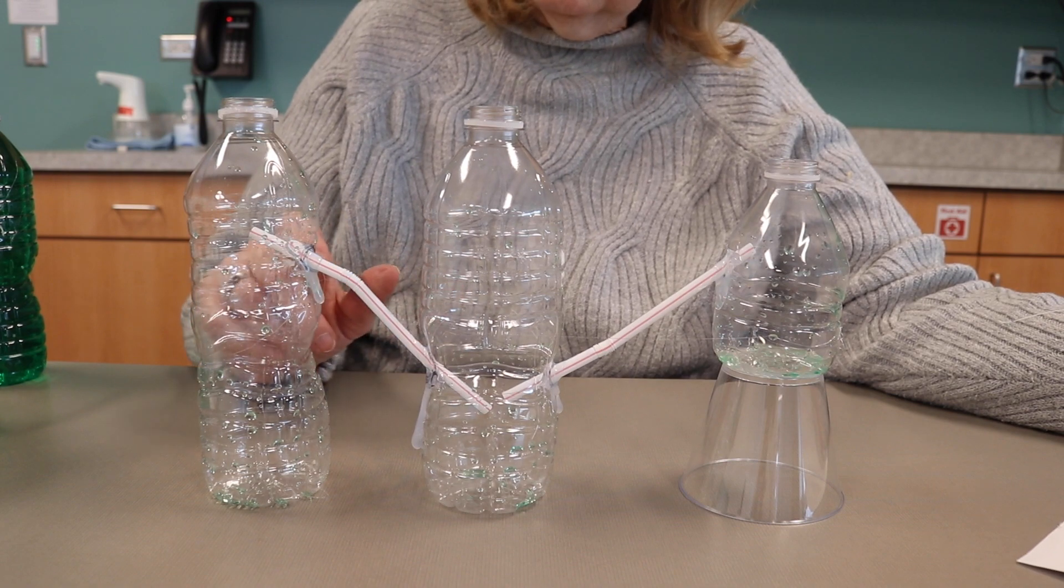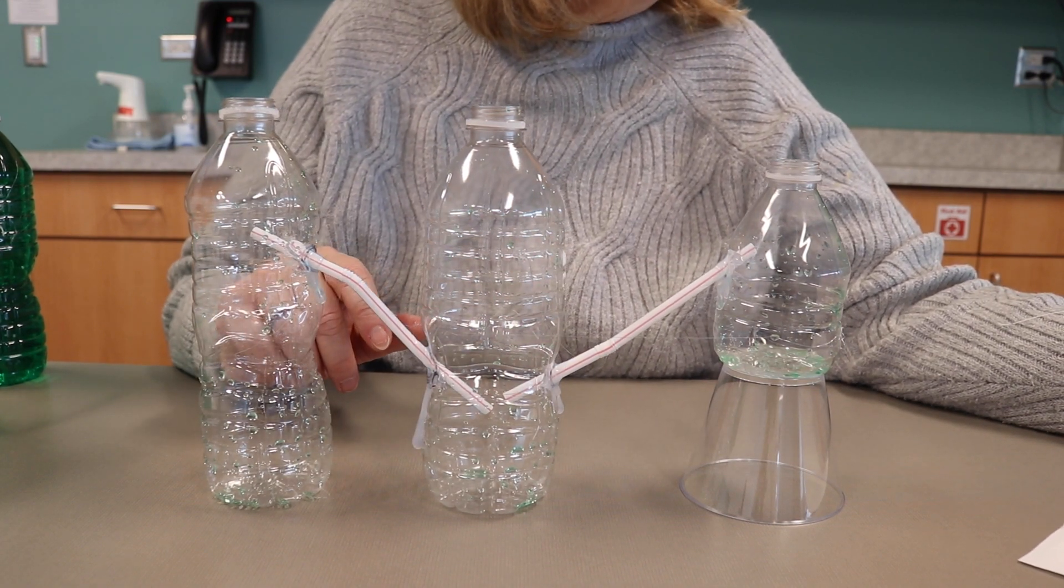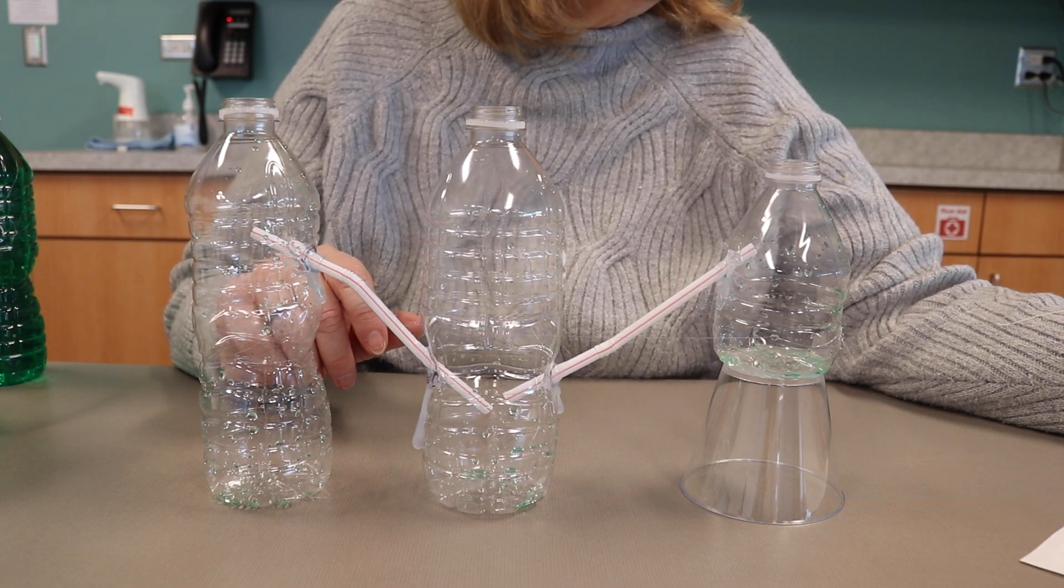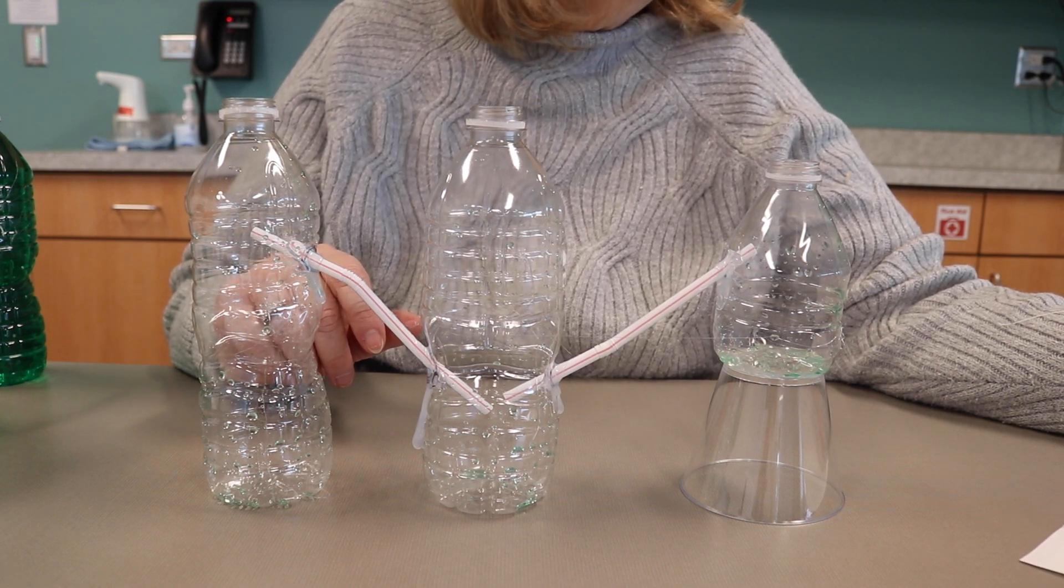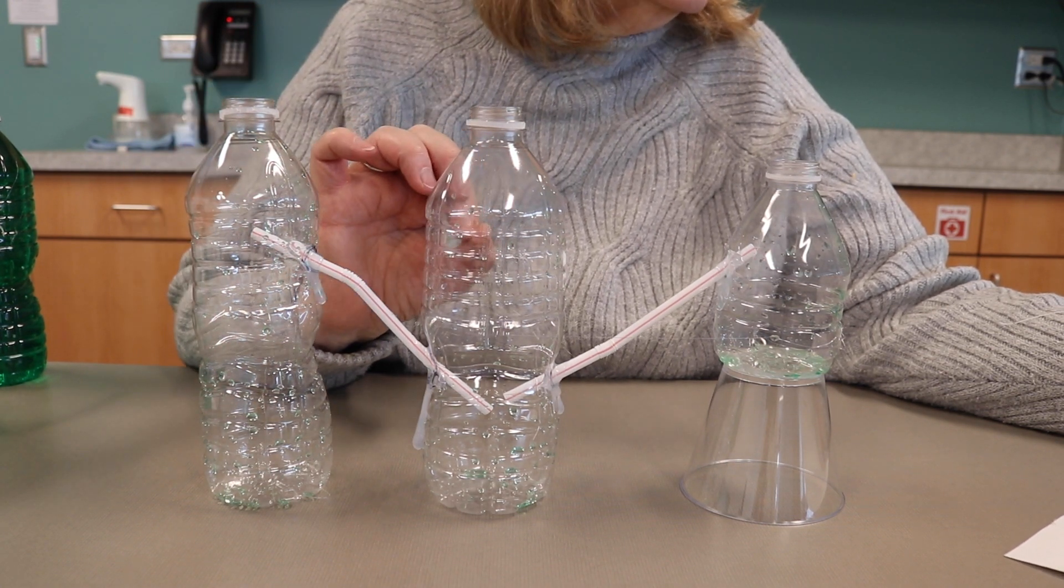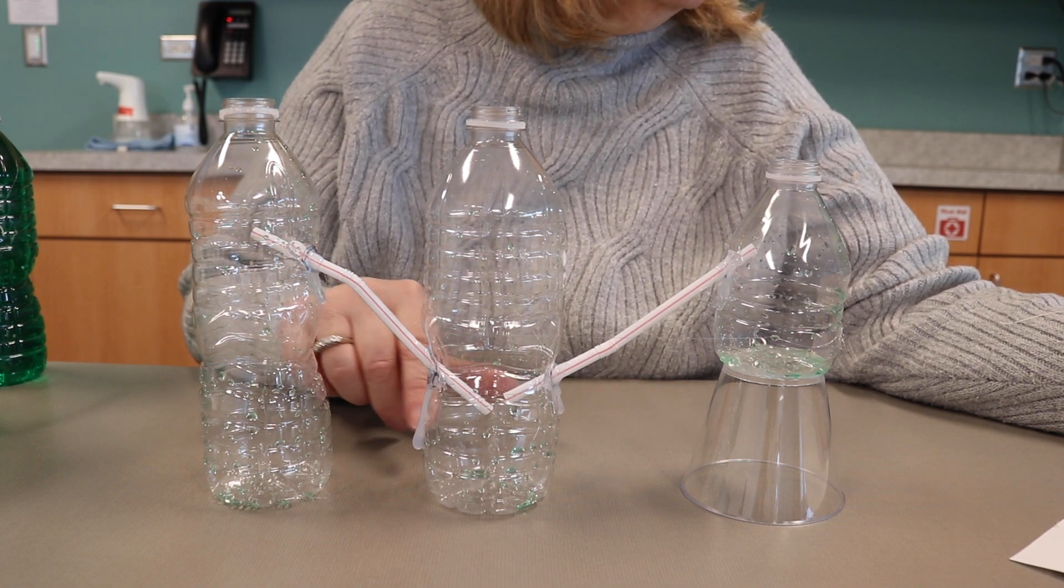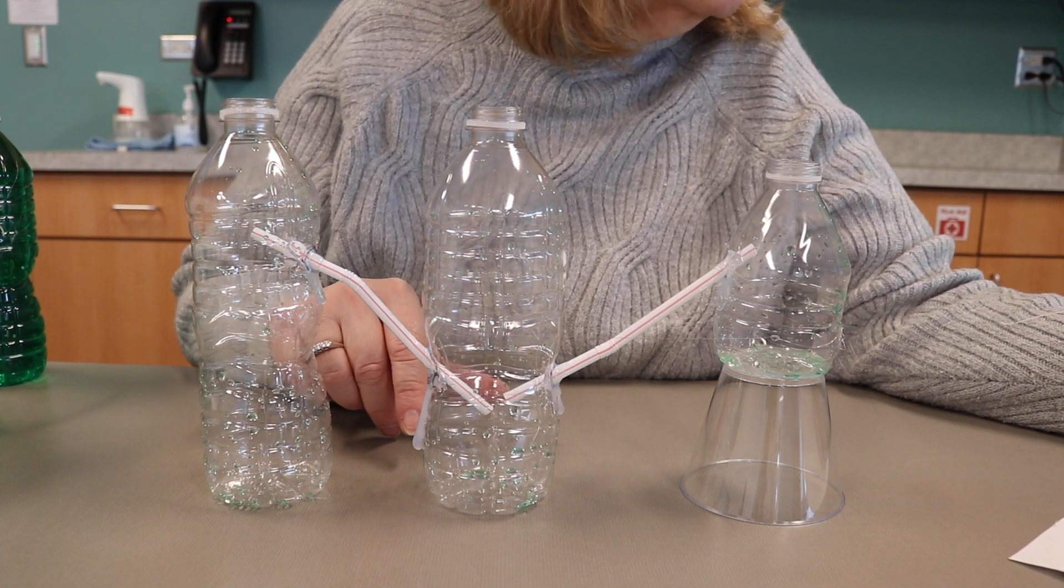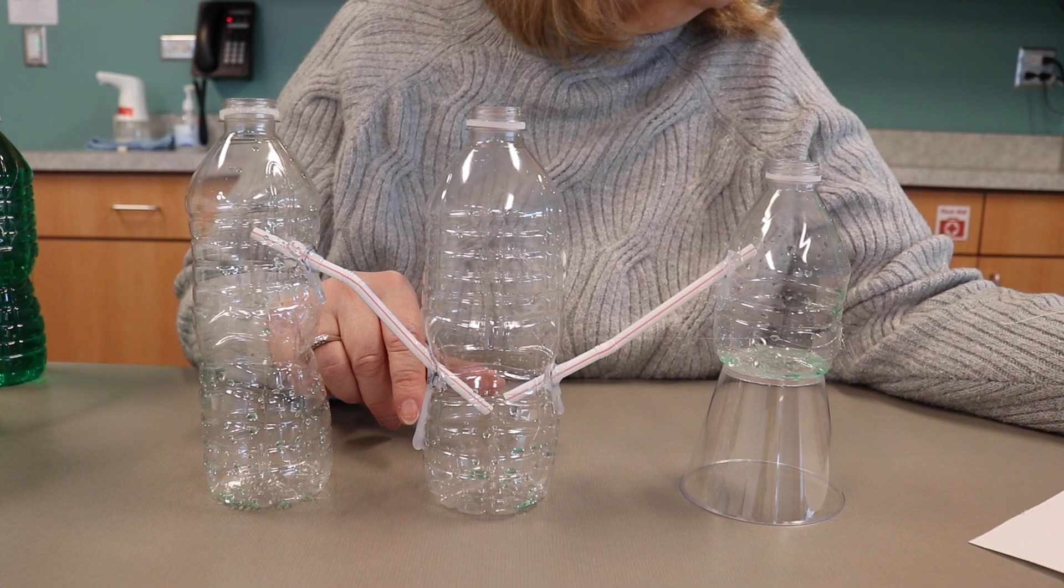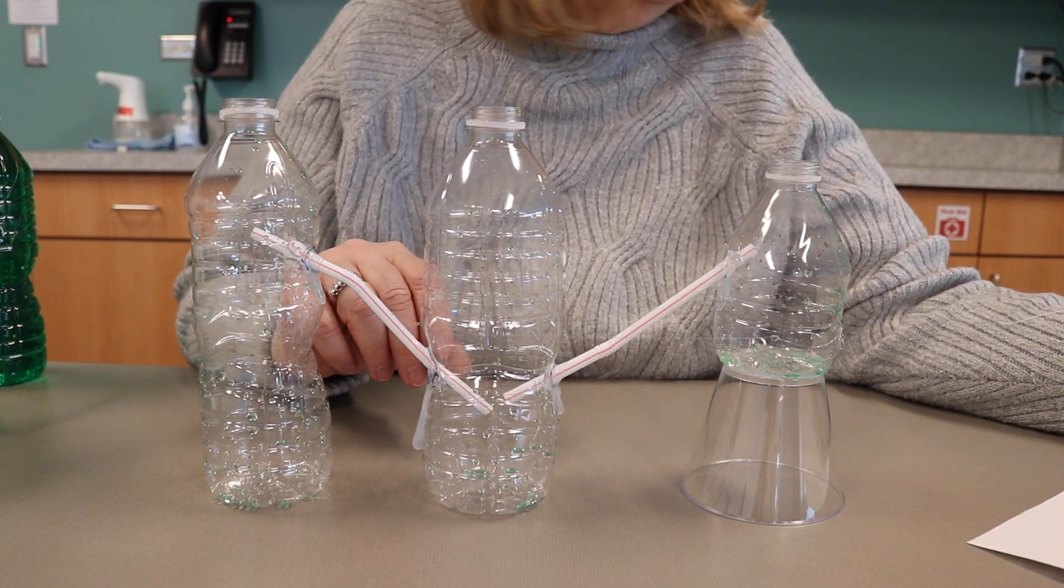Siphons can move water downwards or upwards. As an example, if you had a huge fish tank that needed to be emptied, you could use a siphon. You would put a tube into the fish tank and put the end of the tube lower into a bucket, and then you would take the bucket and bring it to the sink, so it would be easier to empty that fish tank.